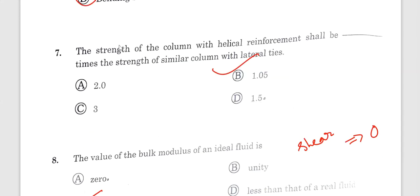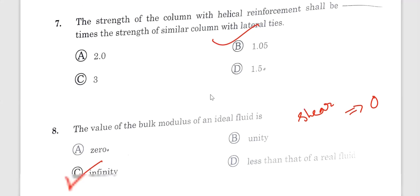Question number 7. I am not to decide the strength of the column with helical reinforcement. If the IS code provision for helical reinforcement: 1.05 times. The strength of the column with helical reinforcement will be 1.05 times of the strength of similar column with lateral ties.